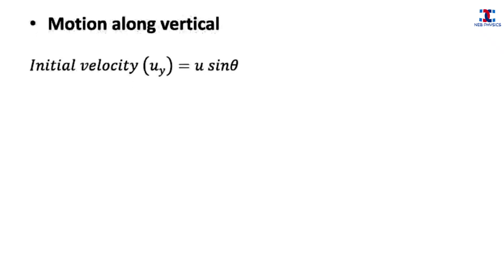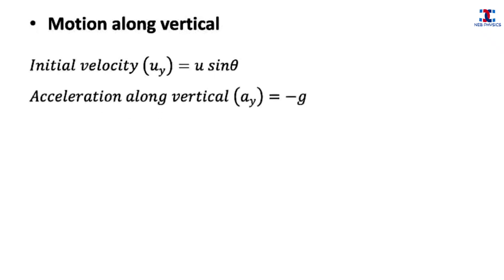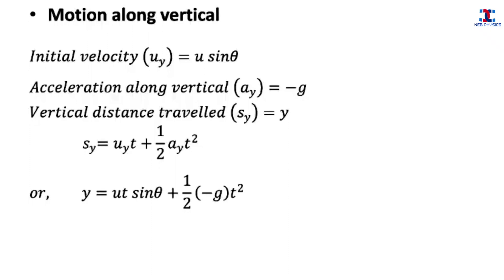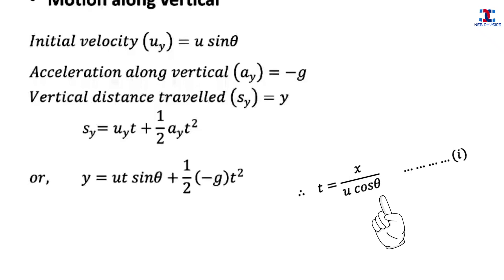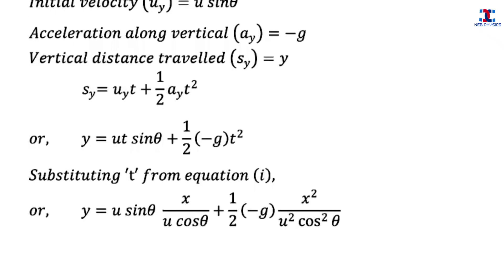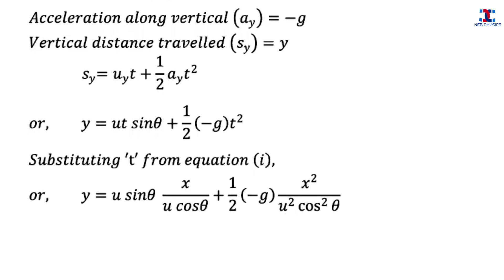Now let us analyze only the vertical motion of the projectile. The initial vertical velocity uy equals u sin theta, the vertical acceleration ay equals negative g (the negative sign accounts for the projectile moving vertically upward), and the vertical distance traveled sy equals y. Using the equation of motion, sy equals uy·t plus half·ay·t², and substituting the values, then substituting t from equation 1, and simplifying, we get equation 2.